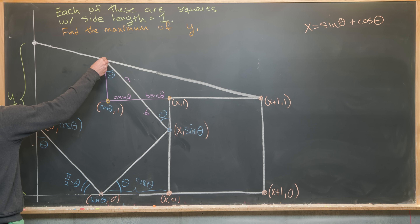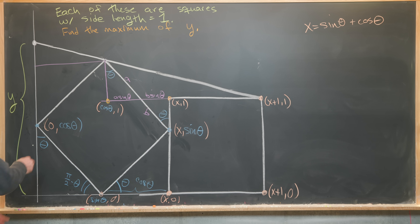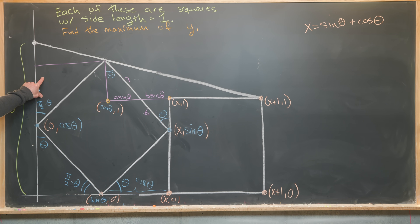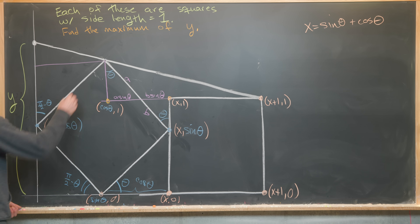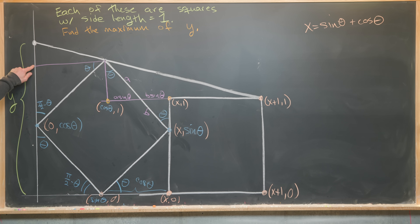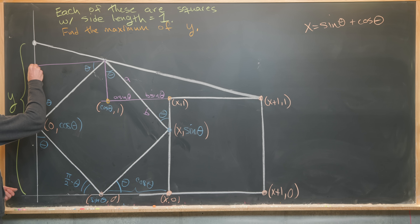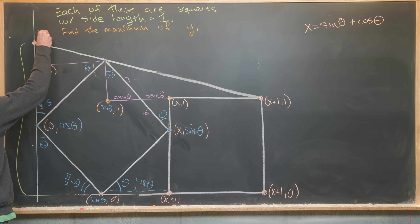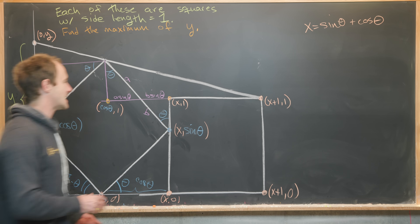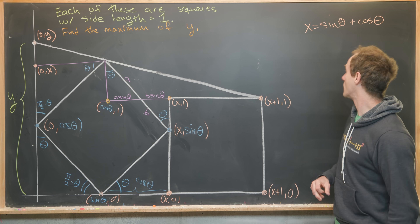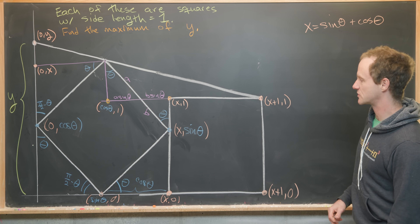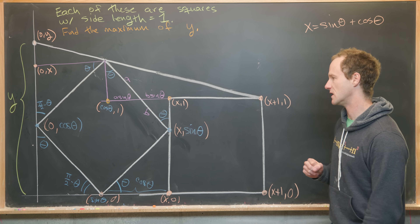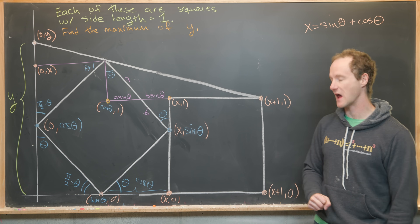We'll complete a triangle over here by taking a horizontal line, noticing that this angle is complementary to theta — π/2 − θ. That tells us this height is equal to sin θ, because this angle here is θ. That makes this coordinate (0, cos θ + sin θ). Since cos θ + sin θ = x, this coordinate is (0, x), and we'll fill in this coordinate as (0, y). Those are all the points we need. Now we'd like to take our identity and solve for sin θ and/or cos θ so we can eliminate the trig functions and express everything in terms of x.